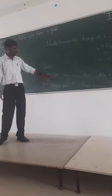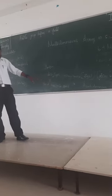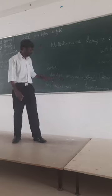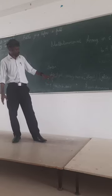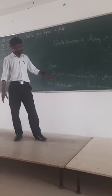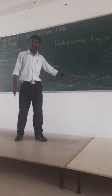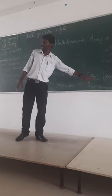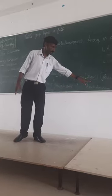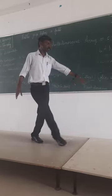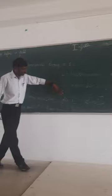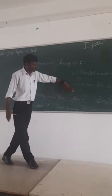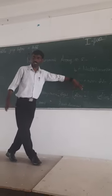This is a multidimensional array having a data type. For a 2D array, we declare the data type, then the array name, then its size — size 1 and size 2. Because it is a 2-dimensional array, that's why we are specifying size 1 and size 2.